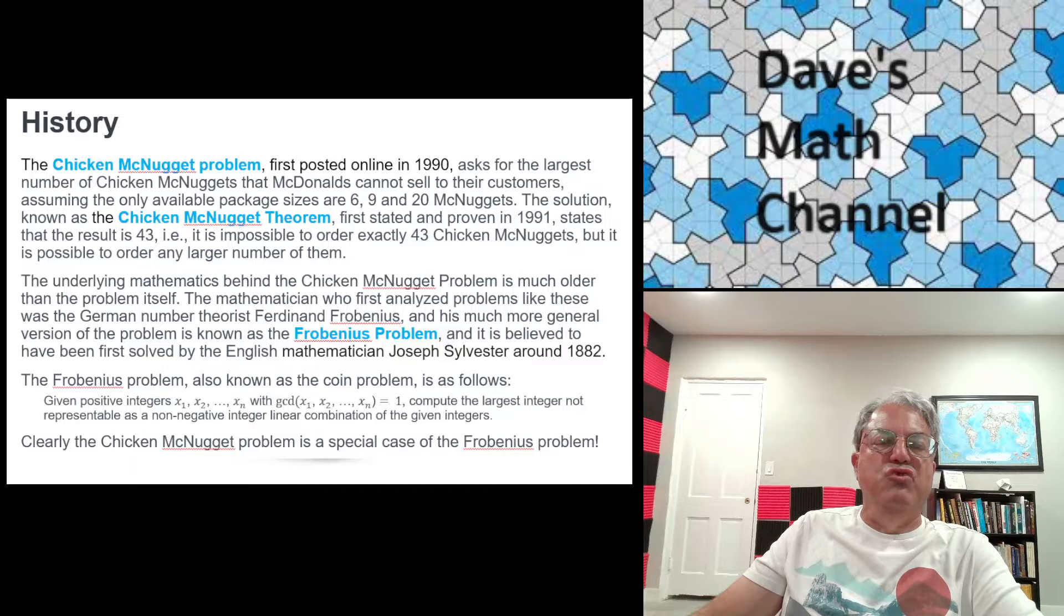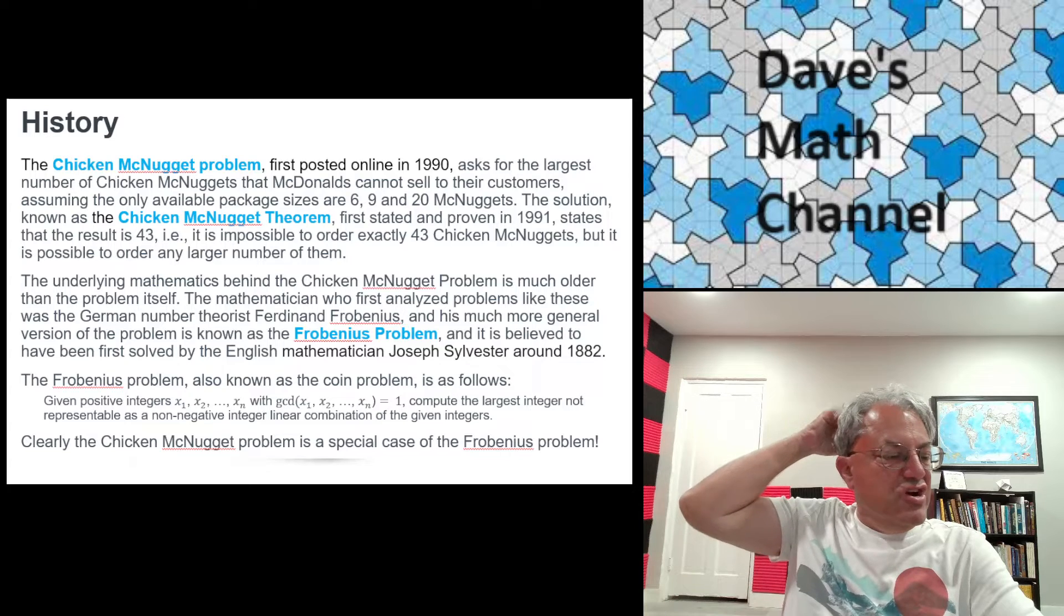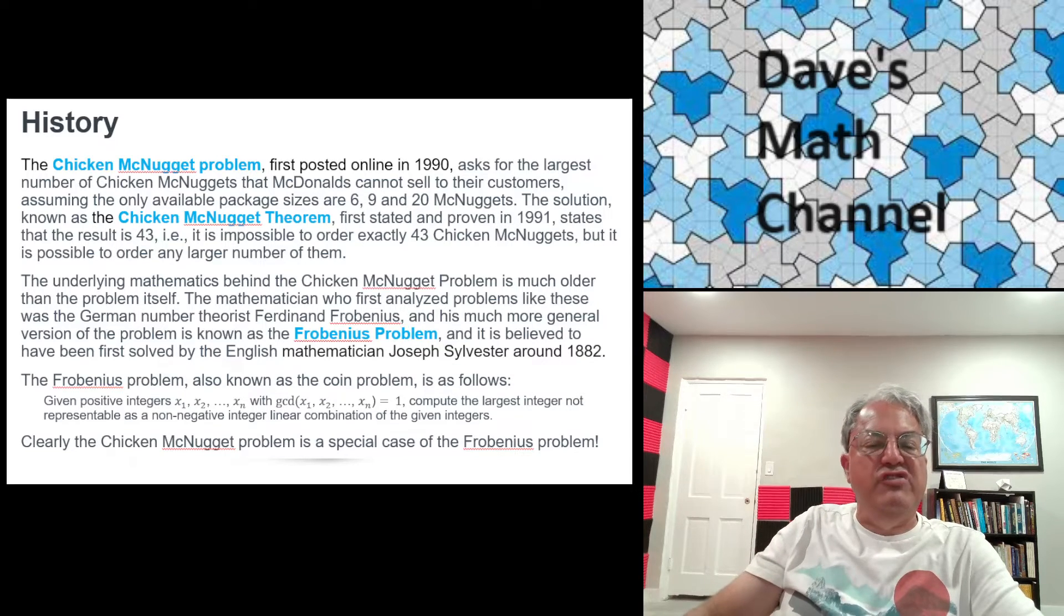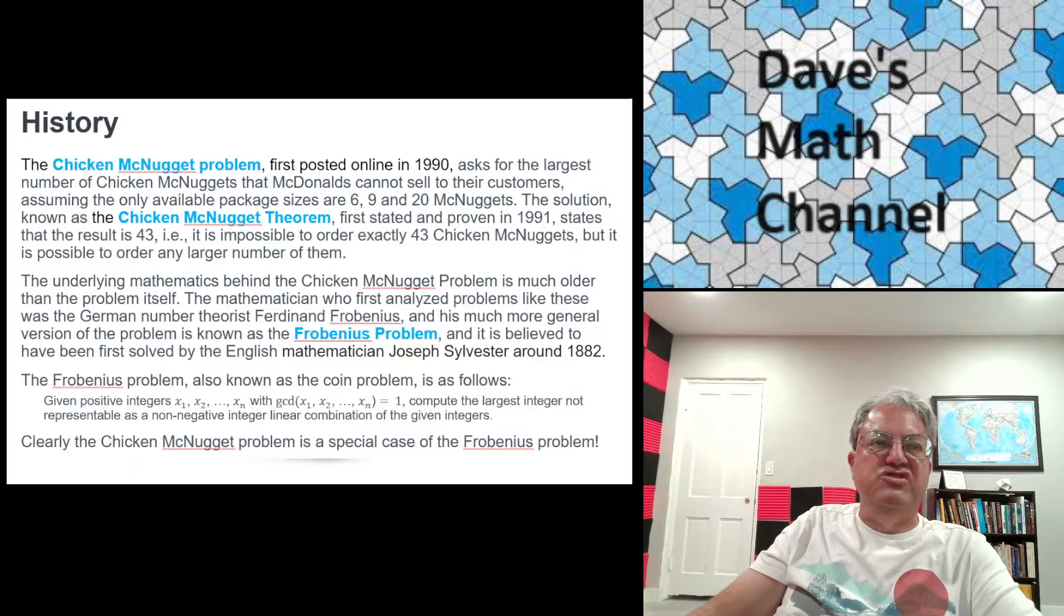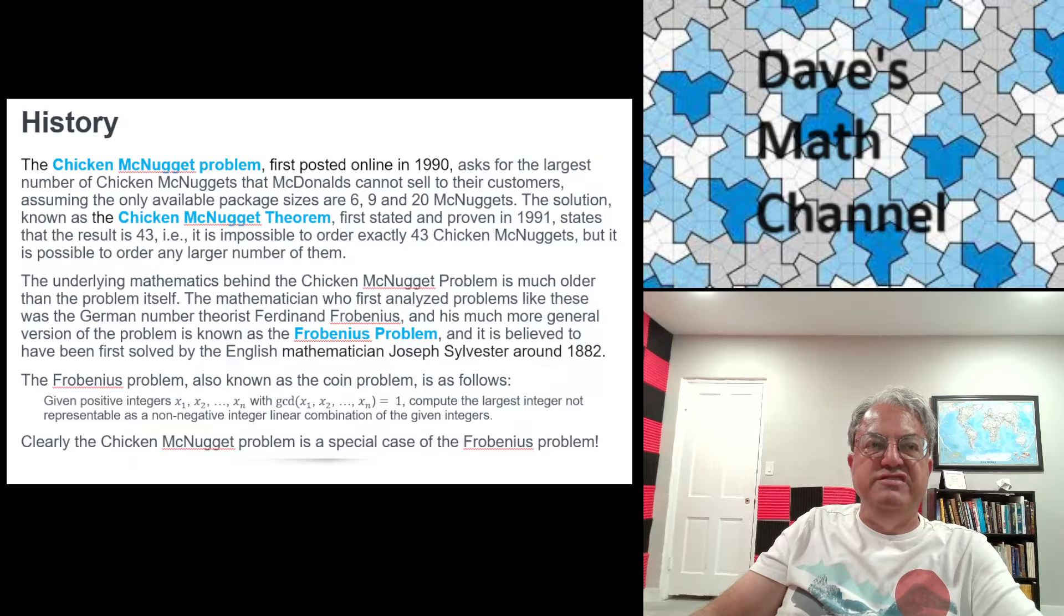But Frobenius was interested in more than just is there a solution. He was also interested in how many solutions there are. That's a more general problem. I think that's the problem Frobenius was addressing. That's why it's known as a coin problem. You might wonder how many ways is possible to make change for a dollar in terms of pennies, nickels, dimes, and quarters. It's a similar problem.